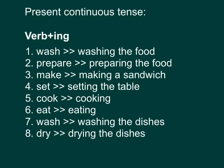小朋友有没有留意到我们刚才学的那些动作，那个字是由 -ing 做结尾的？没错了，这个就是现在进行式 present continuous tense 的特色了。就是 verb 加 -ing。Wash — 清洗，如果我们讲清洗紧，就是 washing，就是 wash 加 ing。Washing the food — 清洗紧的食物。Prepare — 预备，如果我们想讲预备紧，就是 prepare 加 ing。Preparing the food — 预备紧食物。Make — 制造。